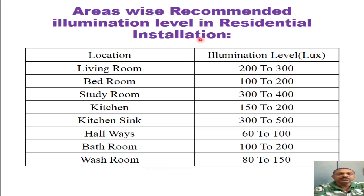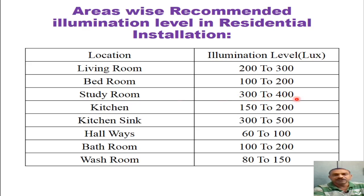Now let us see the area-wise recommended illumination levels in residential installations. The living room, or what we call the hall, should have an illumination level of 200 to 300 lux. The bedroom should have an illumination level of 100 to 200 lux. The study room, where a student or person is going to do reading, writing, or minute work, should have an illumination level of 300 to 400 lux.